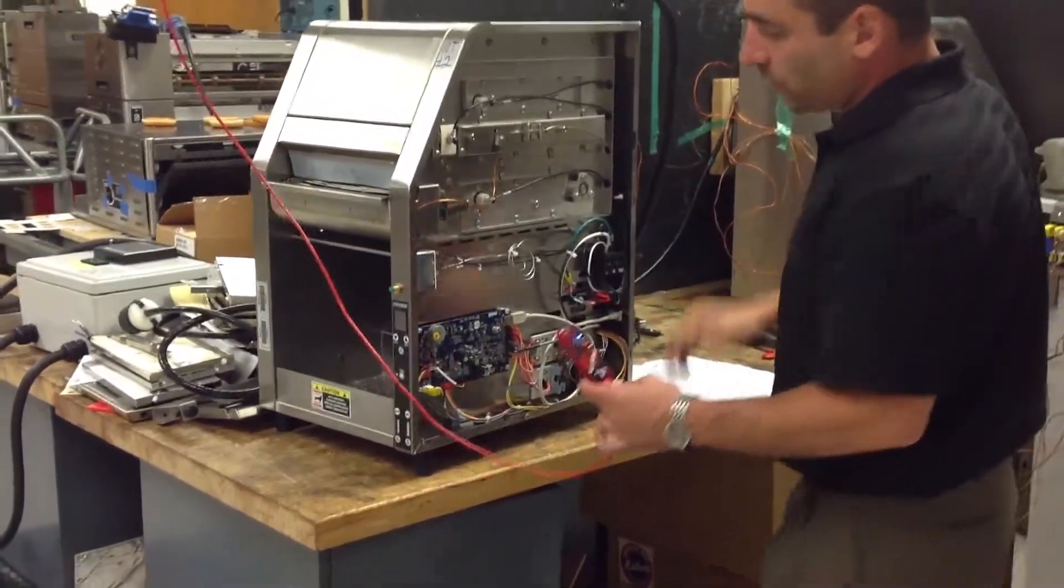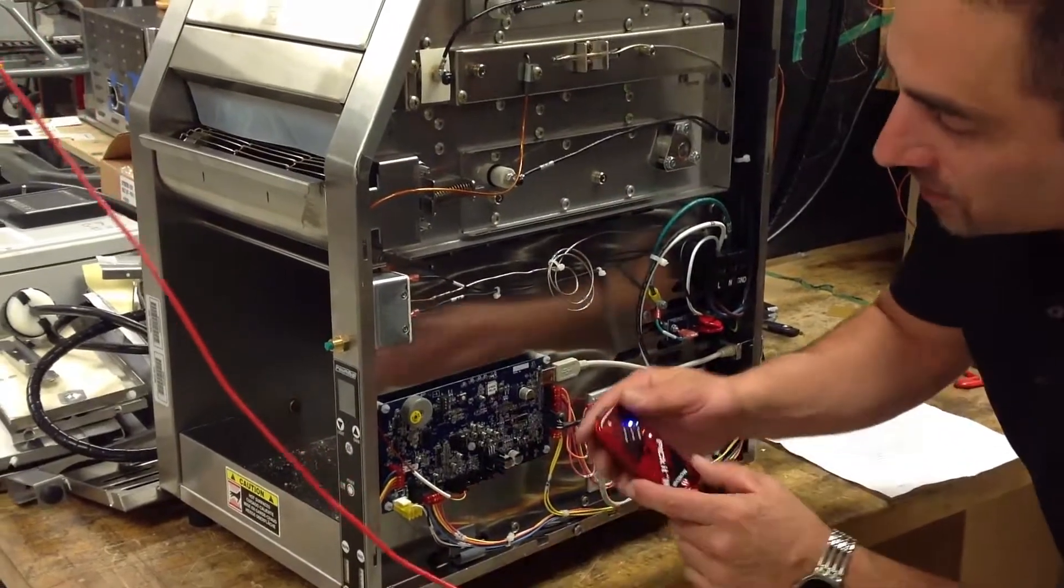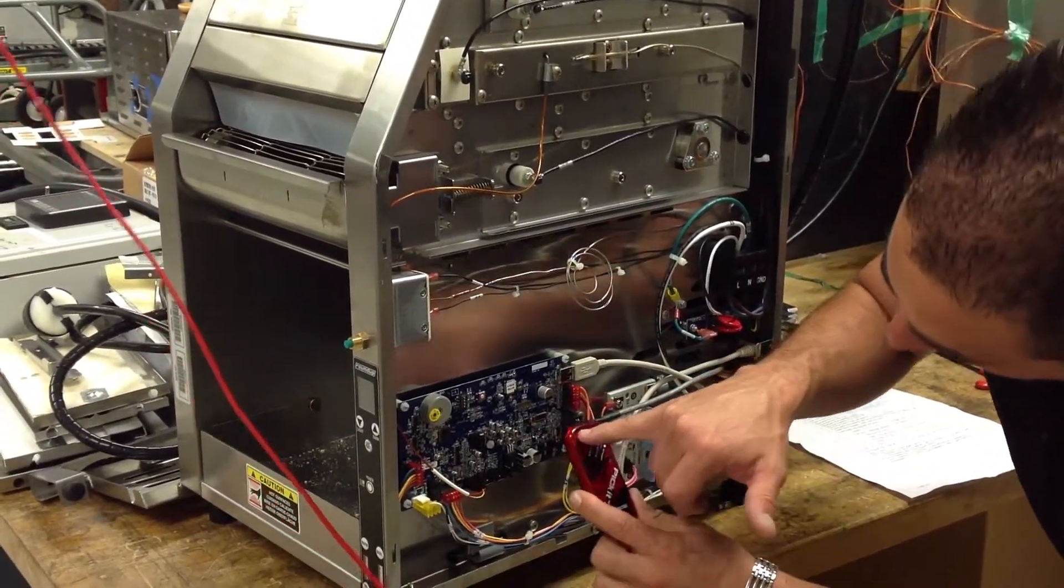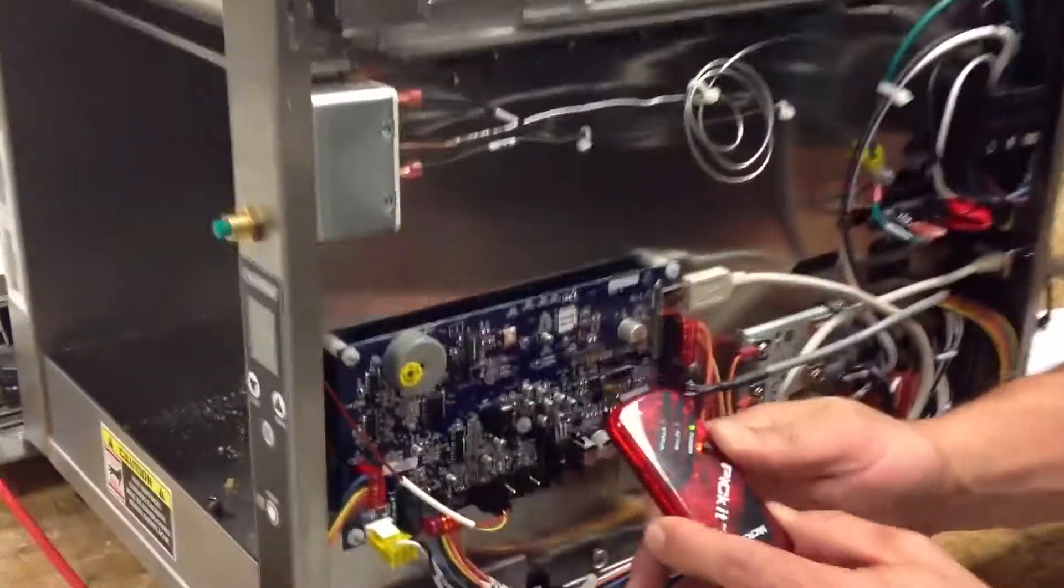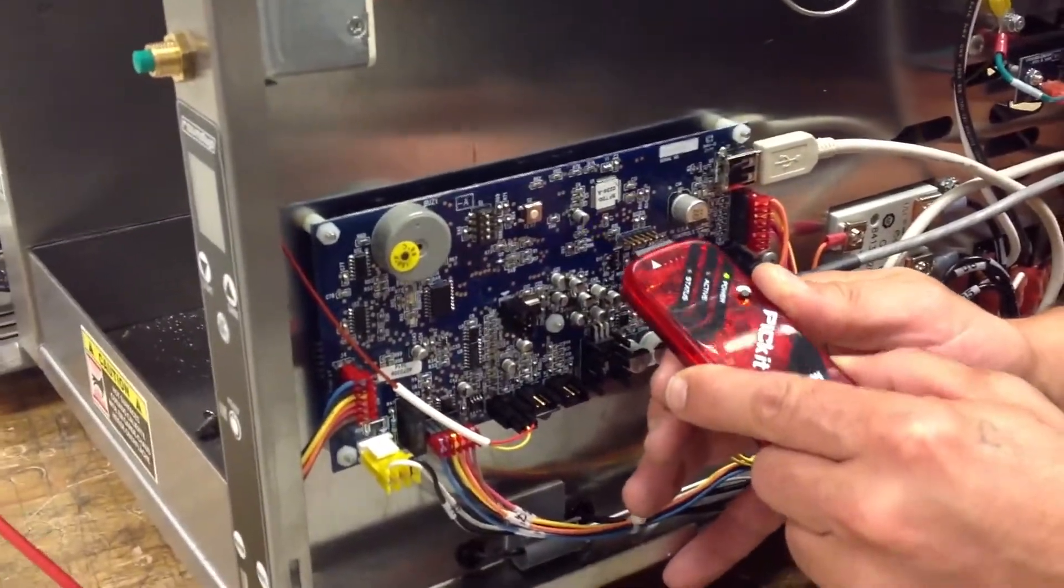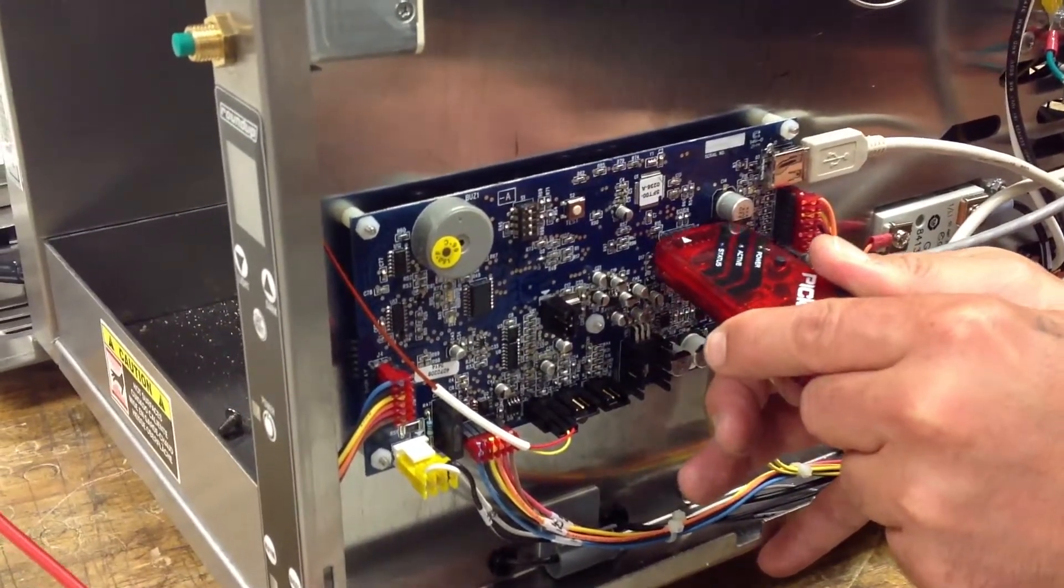Next, we're going to plug this picket into the J1 terminal on the control board. You're going to see the arrow on the picket and an arrow on the control board. The arrow should be facing to your left if you're standing on the side of it. Plug it in and make sure it's on all the pins.